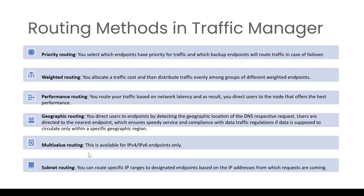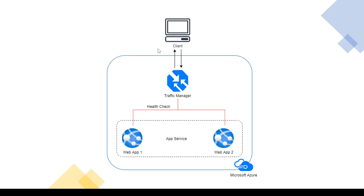So what we're going to do: we're going to create one Traffic Manager and two web applications. We'll assign those two web applications to the Traffic Manager, and then use the various routing methods. Whenever any client tries to access the application through the Traffic Manager, based on the routing method, it will be redirected to either application one or application two.